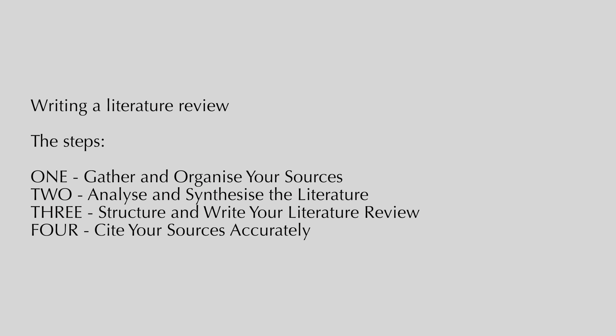Writing a literature review can be easily broken down into four steps. The first is gathering and organizing your sources. The second is analyzing and synthesizing the literature. The third is structuring and writing your literature review. And the fourth is making sure that your citations and sources are accurately placed within the review. It's really as simple as that.